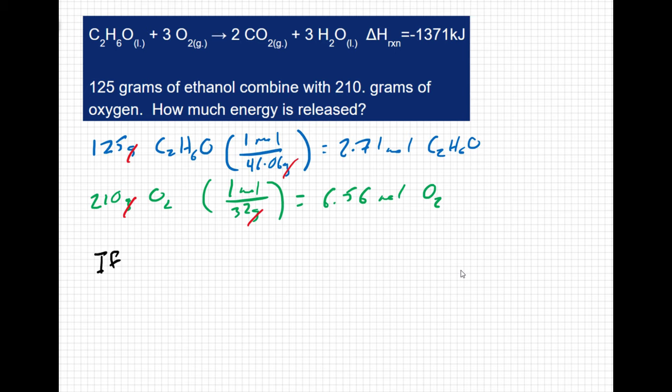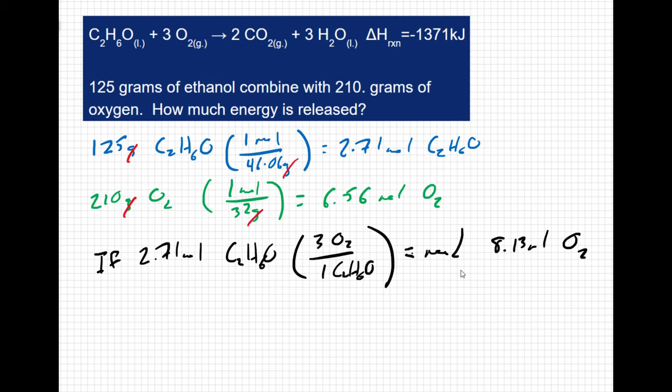if I have 2.71 moles of ethanol, then I need—well, there are three oxygens for every one ethanol—so that means I need 8.13 moles of oxygen. But we only have 6.56 moles of oxygen, which makes O2 the limiting reactant.